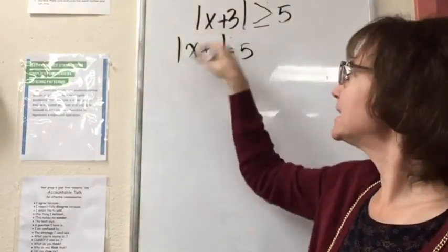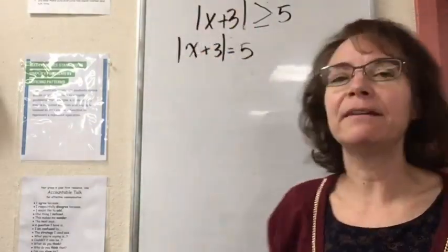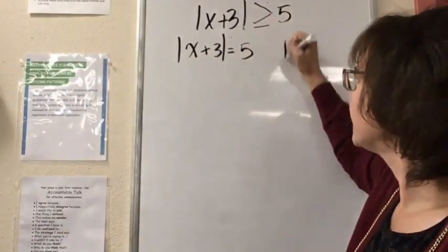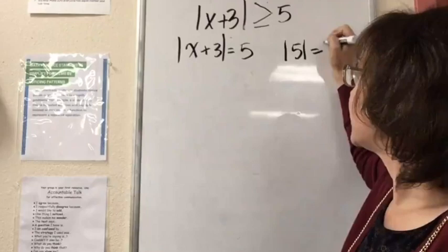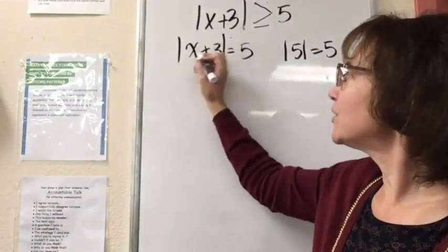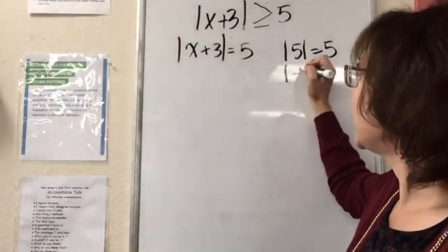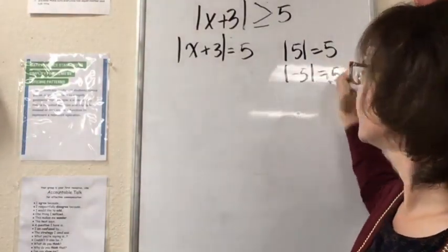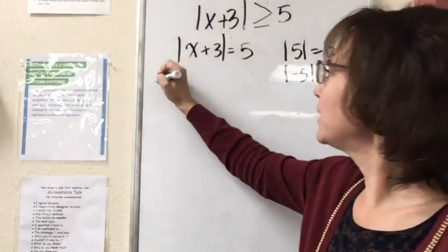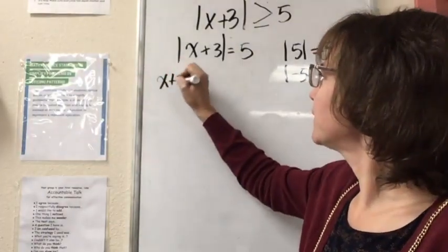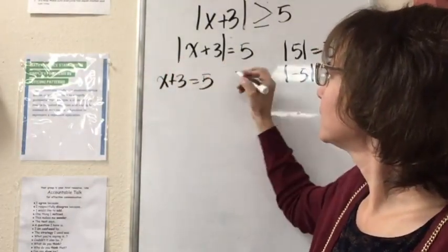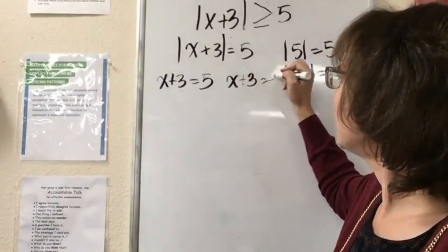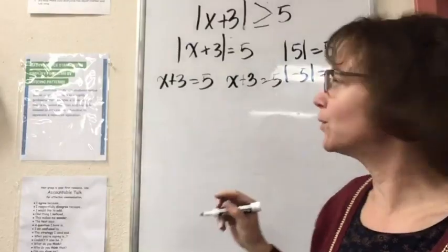In this case, this center right here can be 5 or negative 5. So this x plus 3, if equal to 5, we know the absolute value of 5 is 5. And x plus 3 can also equal negative 5 because the absolute value of negative 5 is also 5. So we are going to have two boundary points, because x plus 3 can be 5 or negative 5 to make this equation true.